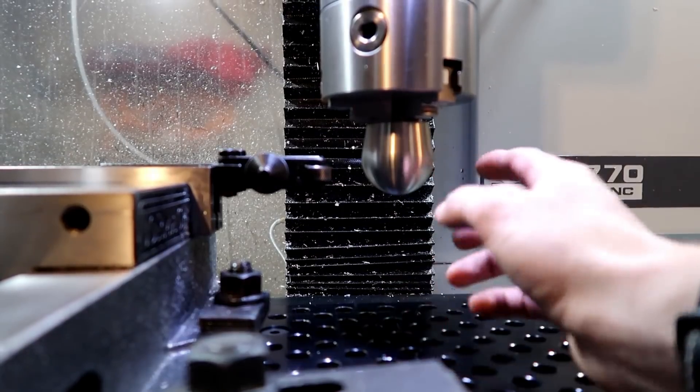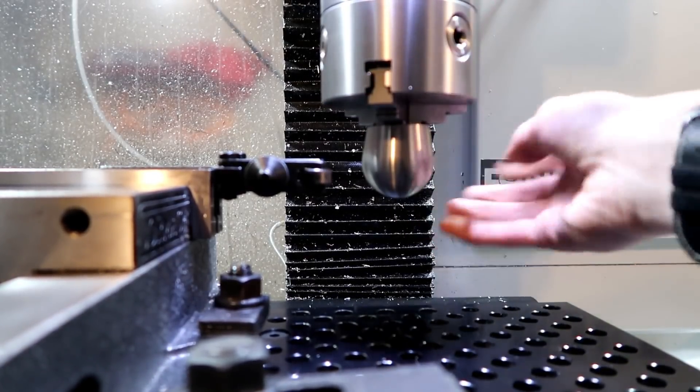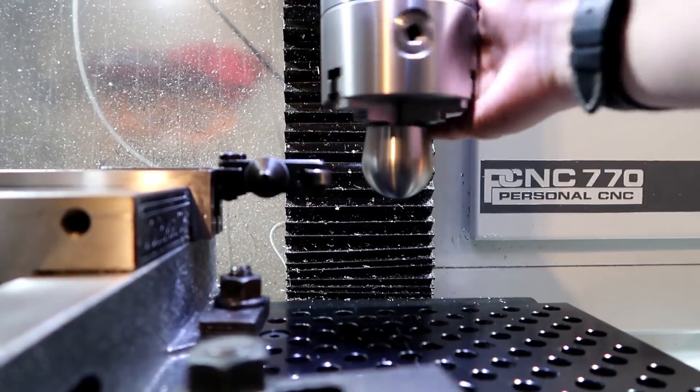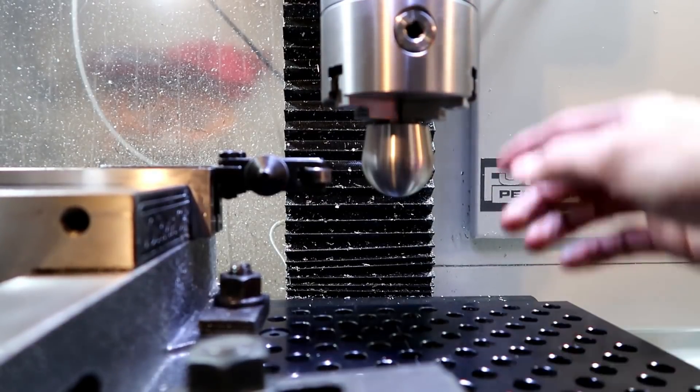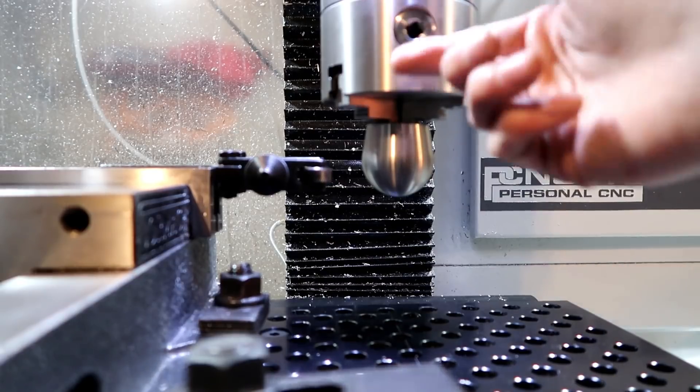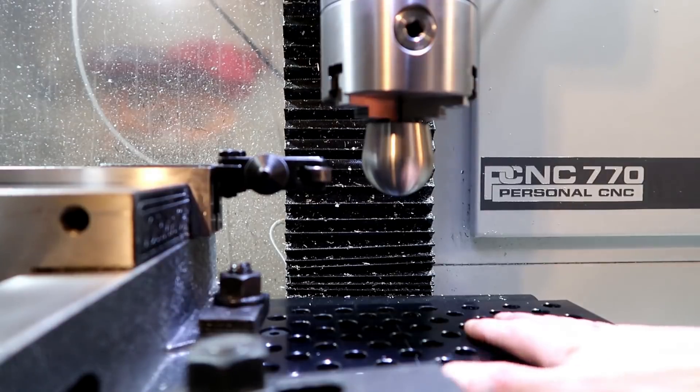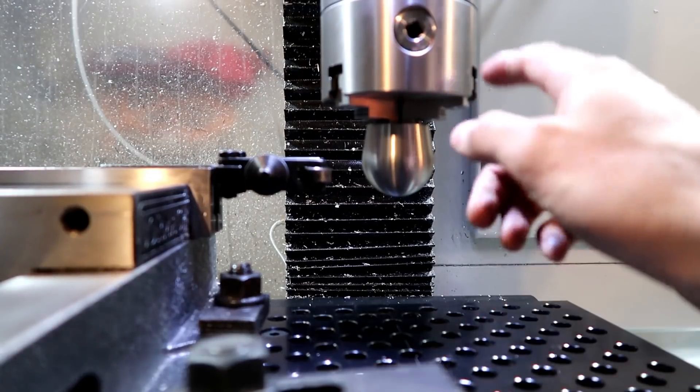So I got her dialed in concentrically to just under one thousandth of runout—not too bad for what we're dealing with here. I think the calibration standard specification for this three-jaw chuck is like five thousandths runout, so I think we'll be doing all right.